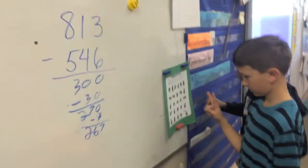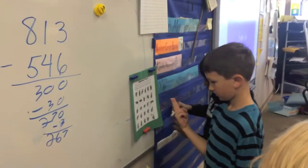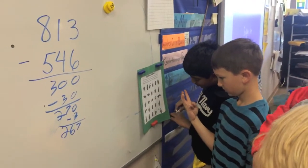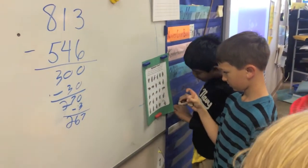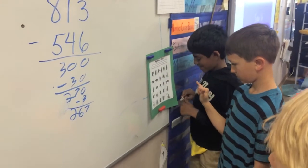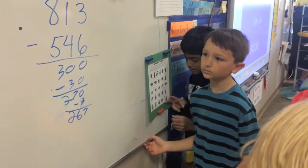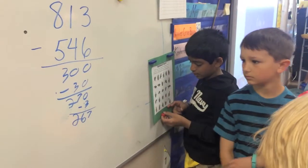So 800 minus 500 is 300, and 10 minus 40 equals negative 30, so I'm going to subtract it.